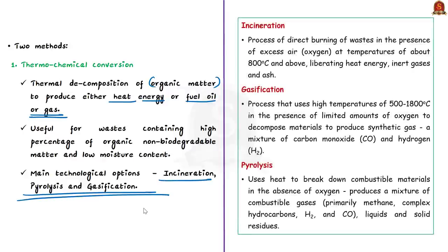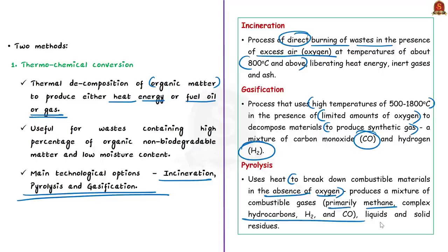Incineration is the process of direct burning of waste in the presence of excess oxygen at high temperatures of about 800 degrees Celsius and above. This will liberate heat energy, inert gases and ash. Gasification uses high temperatures of 500 to 1800 degrees Celsius in the presence of limited amount of oxygen to decompose materials to produce synthetic gas. The synthetic gas is a mixture of carbon monoxide and hydrogen. Pyrolysis uses heat to break down combustible materials in the absence of oxygen. This produces a mixture of combustible gases, primarily methane, complex hydrocarbons, hydrogen and carbon monoxide and also liquids and solid residues. The purpose of pyrolysis of waste is to minimize emissions and to maximize gain.